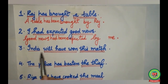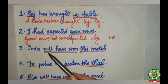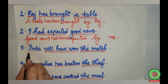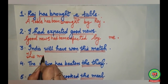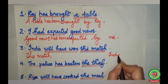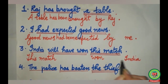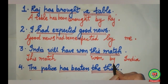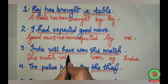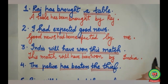Third sentence: India will have won this match. India is the subject, will have won is the action word, this match is the object. This match will come in the beginning, India will go to the last. Won will remain won. Before India we add by. Will have changes to will have been. The sentence becomes: This match will have been won by India.